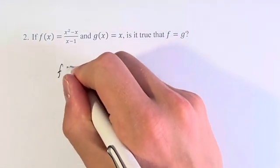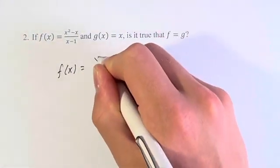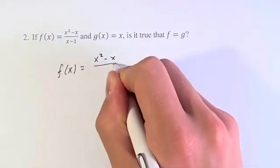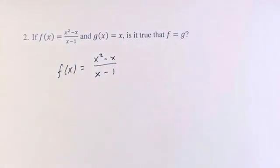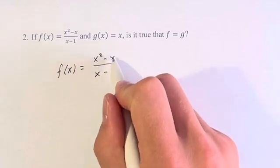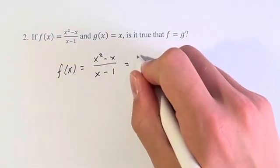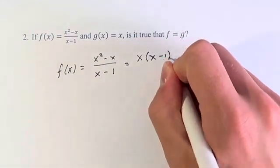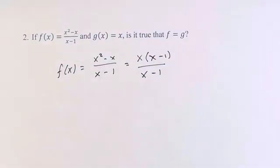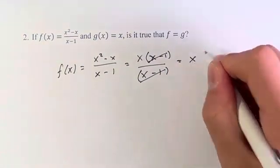Let's take f(x). It's equal to x squared minus x over x minus 1. We can factor out an x from the top which gives us x times x minus 1 over x minus 1. Now we have an x minus 1 over an x minus 1. These can cancel and we get x.